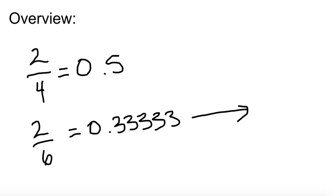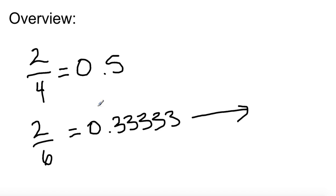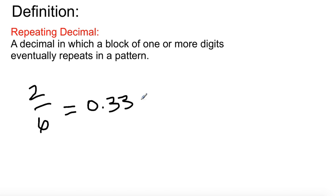Write this down. Definition — Repeating Decimal: a decimal in which a block of one or more digits eventually repeats in a pattern. If we look at the previous example, we have a repeating decimal — it's repeating 3 over and over again. So 2 over 6 gives us 0.33333, and so on and so forth.